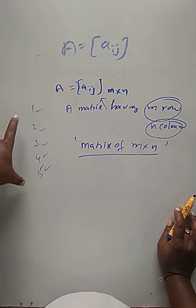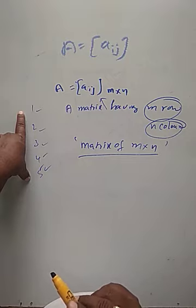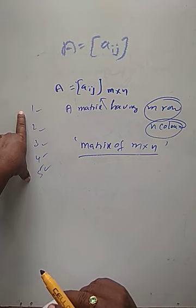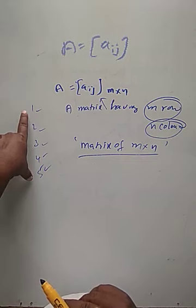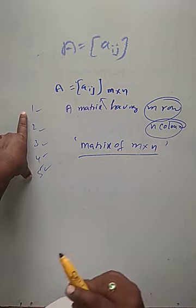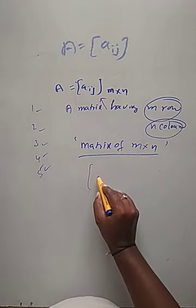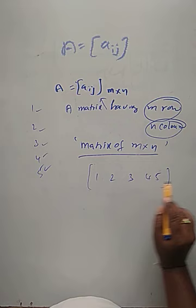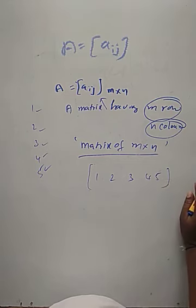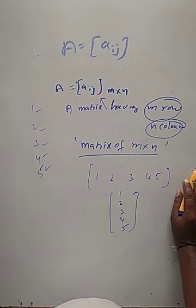Consider a matrix having five elements. To analyze rows, please follow the arrows — horizontal arrows for rows, vertical arrows for columns. How many horizontal lines are there? One — so one row. How many vertical lines? Five — so five columns. That gives one cross five. Another arrangement: five rows and one column gives five cross one. These two representations are correct.